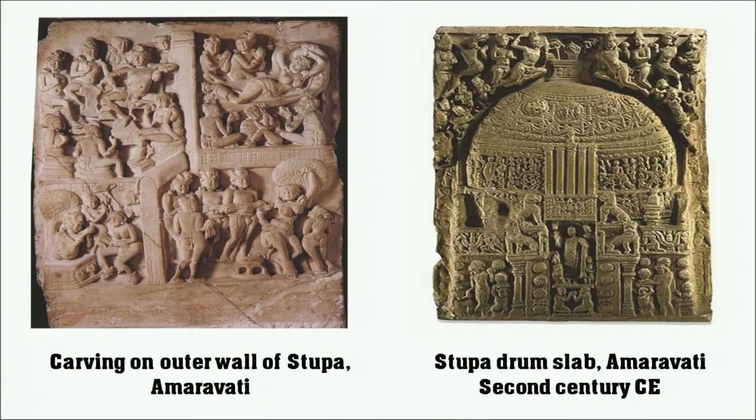Jataka stories were carved in relief and painted. Independent sculptures became an identity, and the major centers of Buddhist sculpture from around the 1st century CE to the 3rd and 4th centuries CE in North India are Sarnath, Gandhara, and Mathura — known as the three schools of sculpture. In addition we have the sculptures of Amravati, which is in present-day Andhra Pradesh.